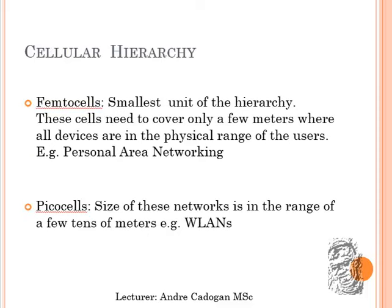Some cellular hierarchy types to consider: femto cells are small units covering only a few meters where all devices are in physical range of the user — for example, a personal area network like Bluetooth. You can actually make a Bluetooth-to-Bluetooth call without incurring any cost. Pico cells are for Wi-LAN technology with a range of more than tens of meters — wide area networks developed for areas like a large building supplying cellular phone users.